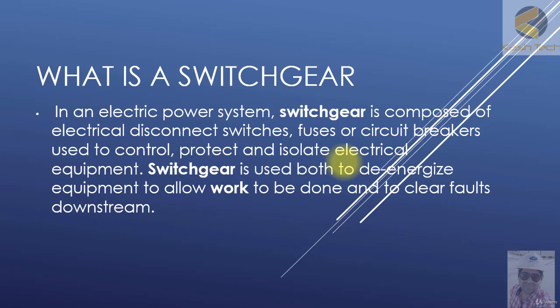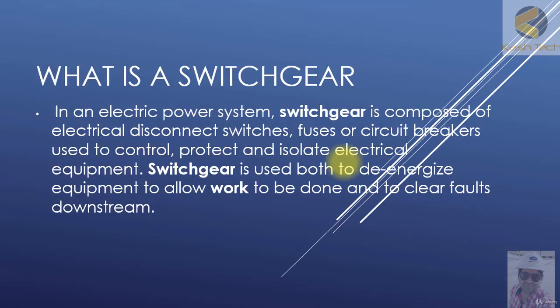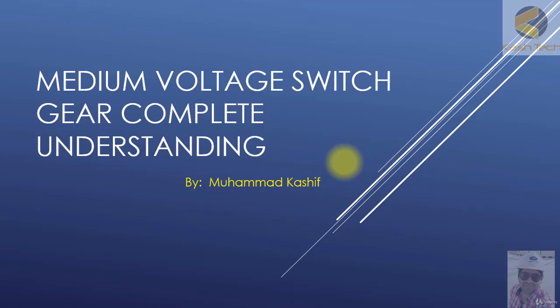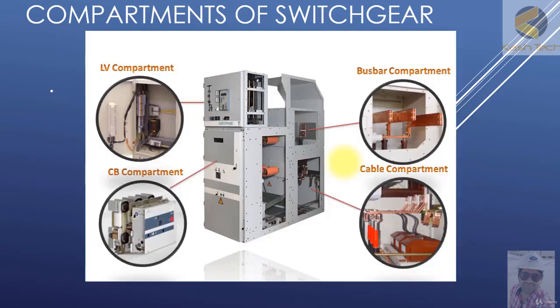I will explain the components of switchgear. Switchgear is divided mainly into parts, and each part has some components. There are basically four compartments: the bus bar compartment, cable compartment, switching compartment, and low voltage compartment.